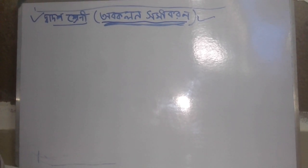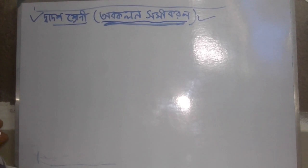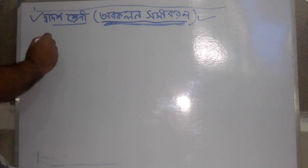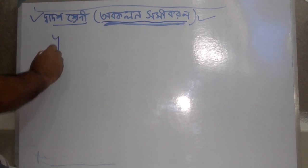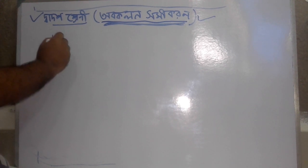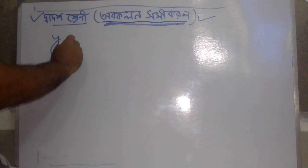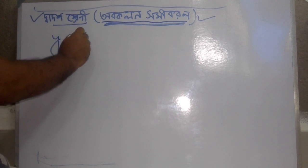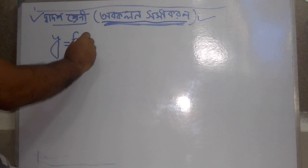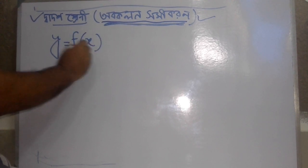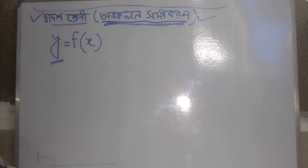The problem is y is the function of x. The problem is x is 4. And y is the function of x.